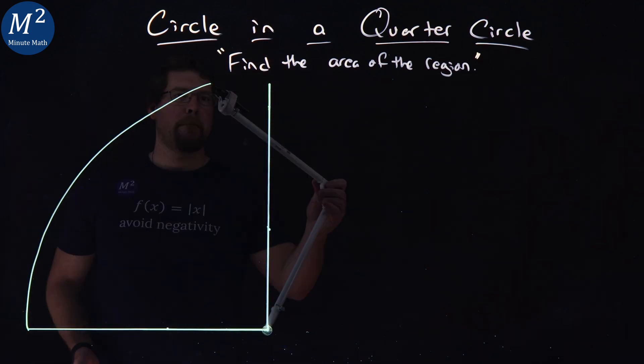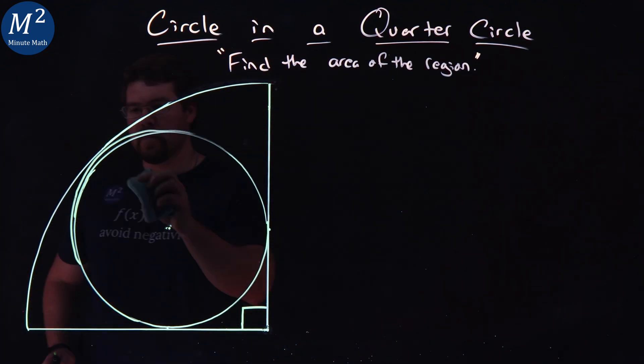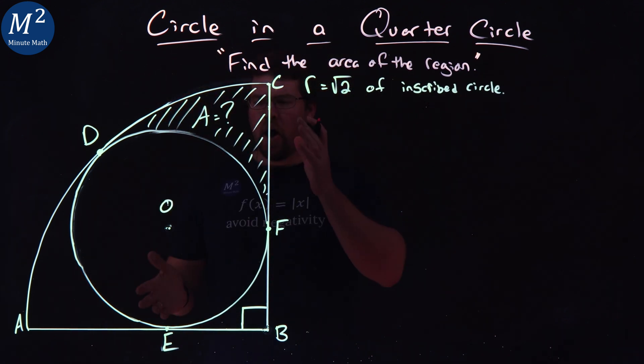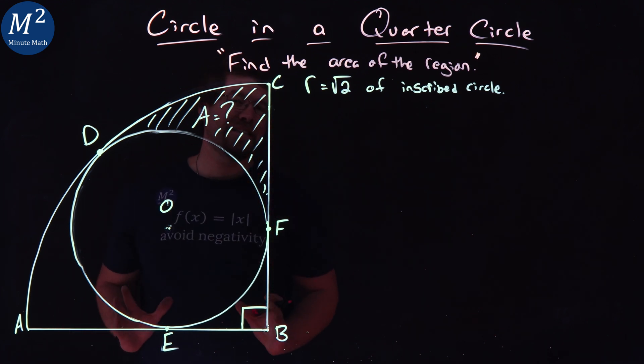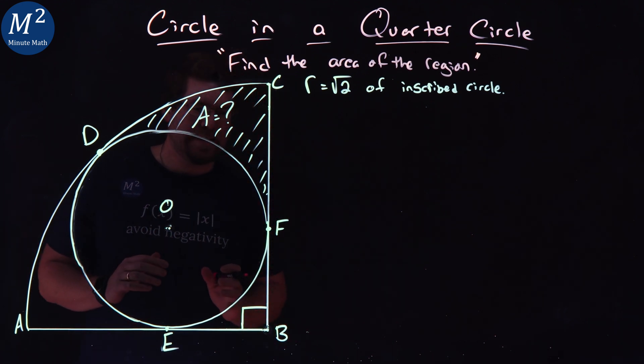Circle in a quarter circle. We want to find the area of this region. Our shape is as such: a quarter circle right here, A, B, C. That quarter circle has inscribed a smaller circle inside of it.